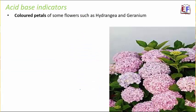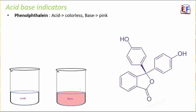Another indicator is the colored petals of some flowers such as hydrangea and geranium. Their petals act as acid-base indicators. We also have chemical indicators like phenolphthalein, which acts as a very good acid-base indicator. This is how the structure of phenolphthalein looks. In acidic solution, it is colorless, and in basic solution, it turns pink. That's how we identify between acid and base.